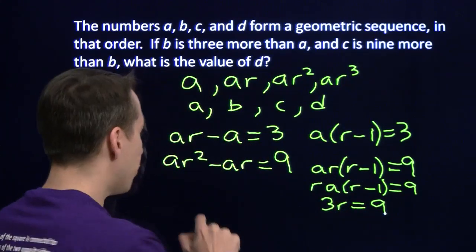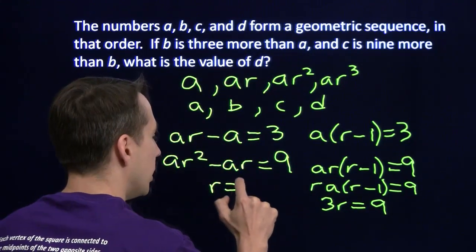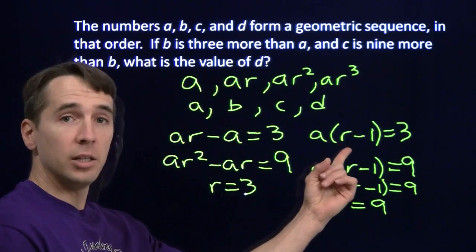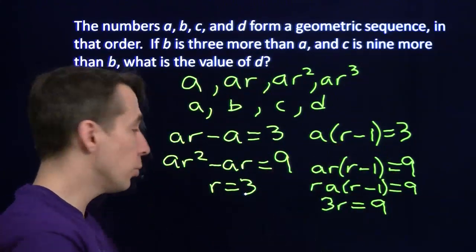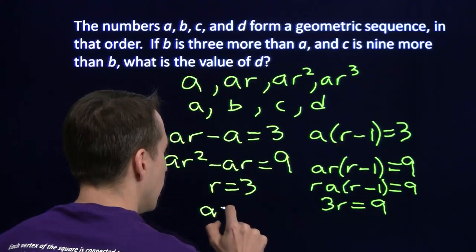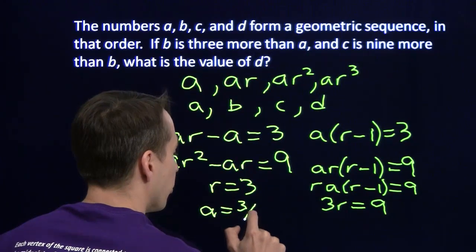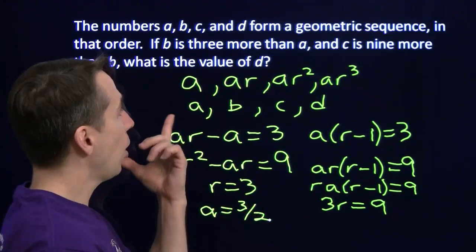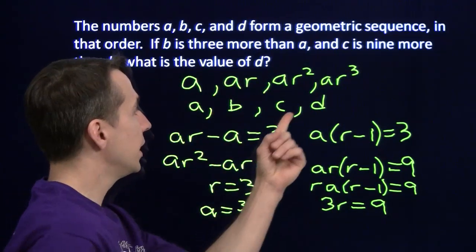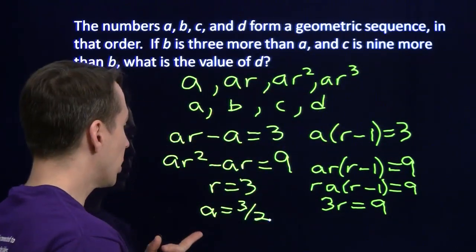And I have three R equals nine. So now I can divide by three, and I've learned that R equals three. And if I put R equals three back in here, I have A times two equals three. And that gives me A equals three halves. Now again, I go back and I read the question. What is the value of D?